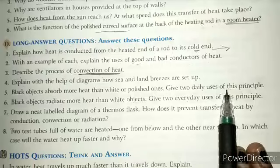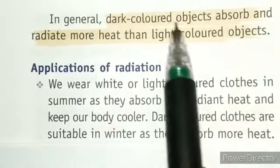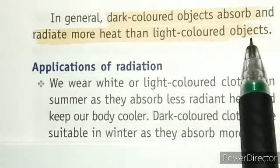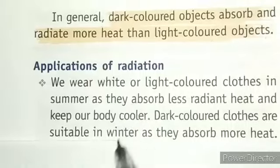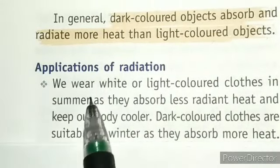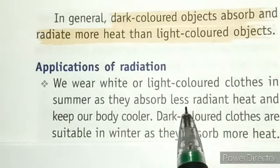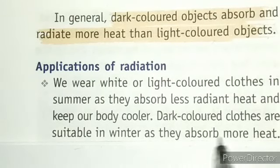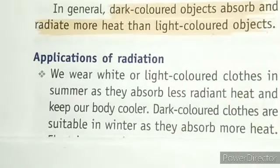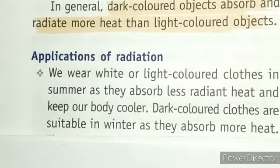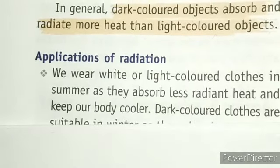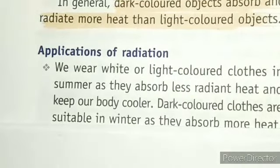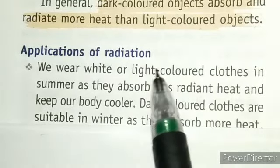The next question: black objects absorb more heat than white or polished ones — give two daily uses of this principle. Dark colored objects absorb and radiate more heat than light colored objects. We wear white or light colored clothes in summer as they absorb less radiant heat and keep our body cooler. Dark colored clothes are suitable in winter as they absorb more heat. Black color absorbs maximum radiation, while light colors like white reflect more.